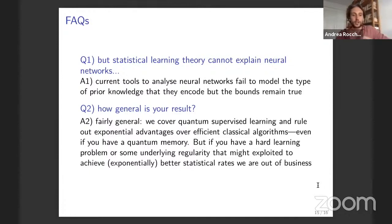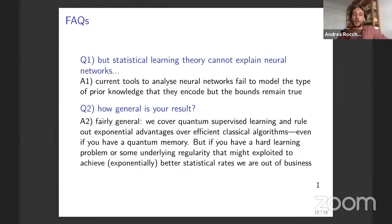Another frequent question: how general is your result? It is fairly general, but let me stress again that we only cover supervised learning and only rule out exponential advantages over efficient classical algorithms. If your algorithm has a super-polynomial runtime, our results no longer apply. Also, if you have a lot of prior information you could get better bounds — but you'd need exponentially better statistical rates before these arguments stop working.